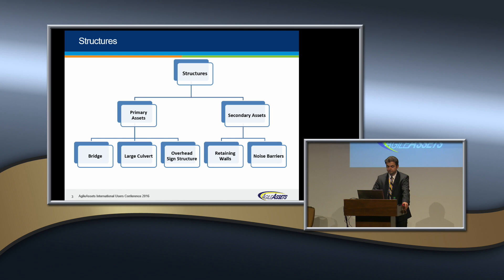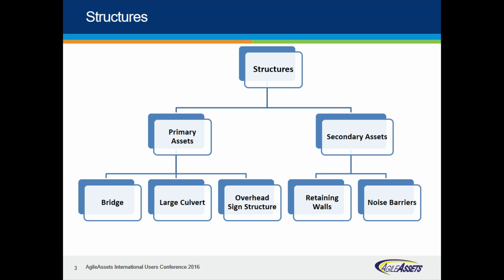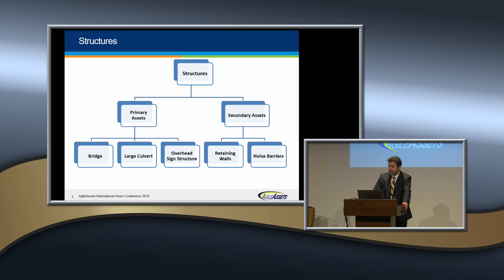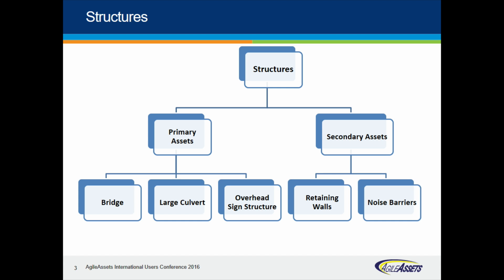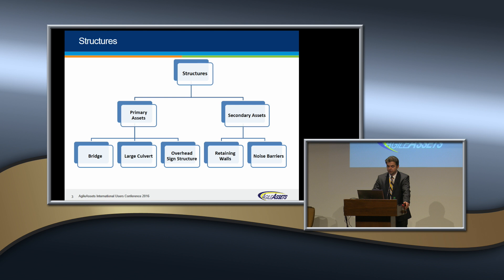Here is the hierarchy of structures we have in the New York system. We have two types of structure categories: primary assets and secondary assets. You may know a bridge inspector module to inspect only bridge structures, but we are utilizing this module and expanding it to other structure types. Under primary assets, we have bridge, large culvert, and overhead sign structures. Under secondary assets, we have retaining walls and noise barriers.